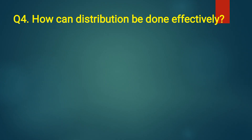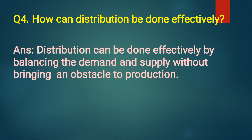Question No. 4: How can distribution be done effectively? Answer: Distribution can be done effectively by balancing the demand and supply, and without bringing an obstacle to production.